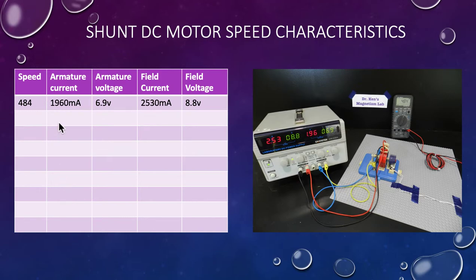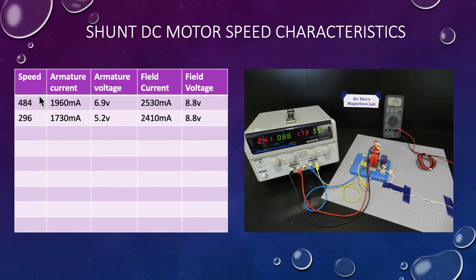So the first thing I've done here is I've got the armature current at 1960 milliamps or 1.9 amps. My armature voltage is 6.9. My field voltage is 8.5. And you can see very clearly my speed is 484. So the next thing I'm going to do is reduce the armature current. You'll notice that field current hasn't changed very much, the voltage certainly hasn't changed.